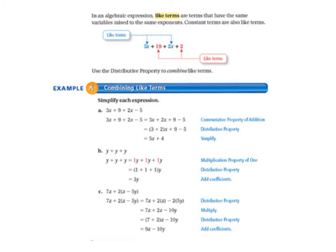The next page, 136, at the top, there's a reminder of the vocabulary word that you wrote down during the last lesson, like terms. Just to remind you, in an algebraic expression, like terms are terms that have the same variables raised to the same exponents. Constant terms are also like terms. So 5x and 2x in this expression are like terms, and 19 and 2 are like terms. We're going to use the distributive property sometimes to combine like terms.